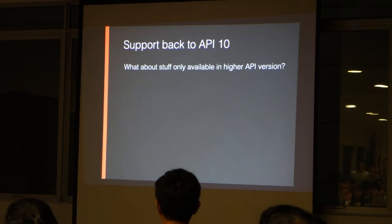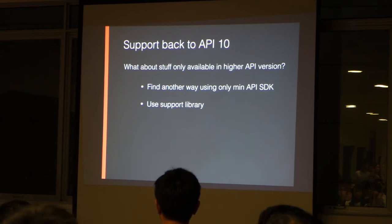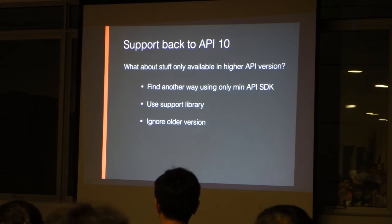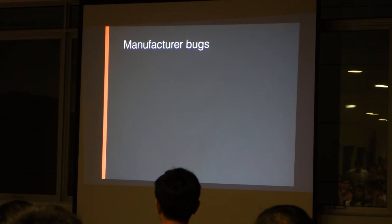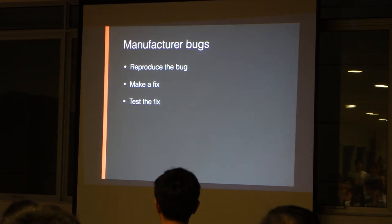For features only available in higher API versions, you can find another way using lower API version approaches, or use a support library if available. Note that for support library, some methods are no-ops on older API versions — they do nothing. For example, if you want to show or hide something with a complicated animation, on older versions you can just show or hide immediately, and show the animation only on higher API versions. You will also encounter a lot of manufacturer bugs, because manufacturers tend to implement things differently from AOSP. The steps I usually follow are: reproduce the bug, make a fix, and test the fix.